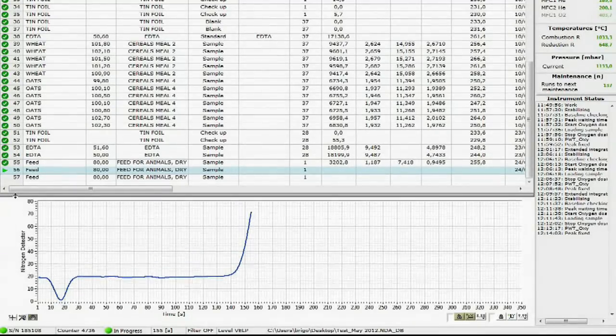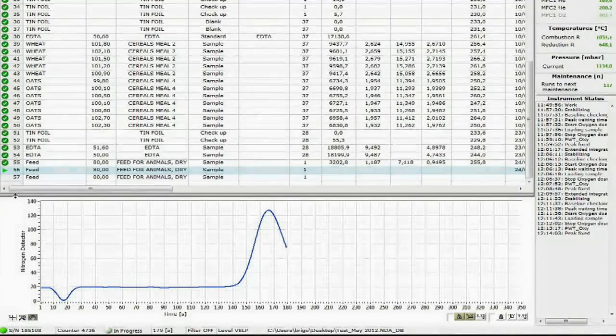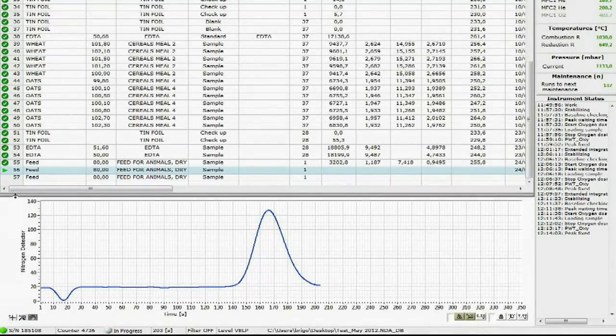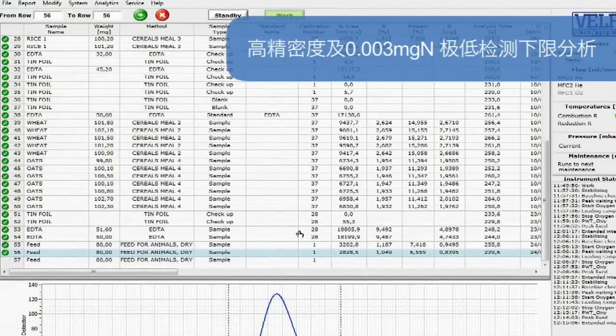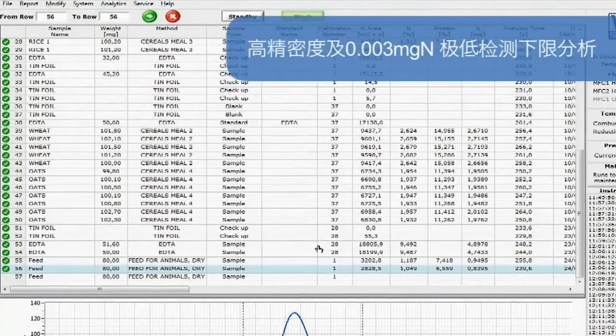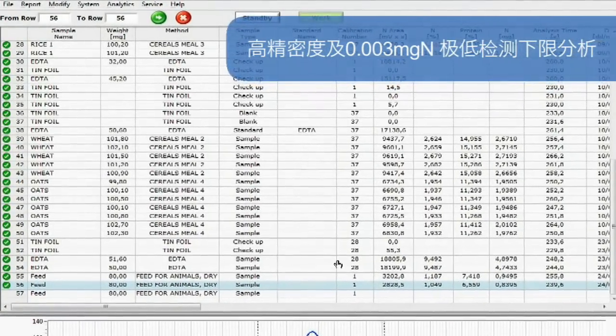The real-time graph shows the progress of the analysis, creating the peak as soon as the nitrogen starts reaching the thermal conductivity detector. The NDA701 provides the highest precision of any such analyzer on the market with the lowest detection limit of 0.003 mg of nitrogen.